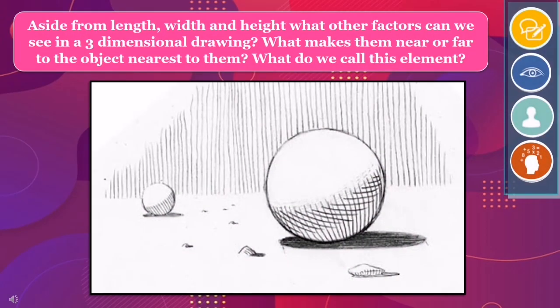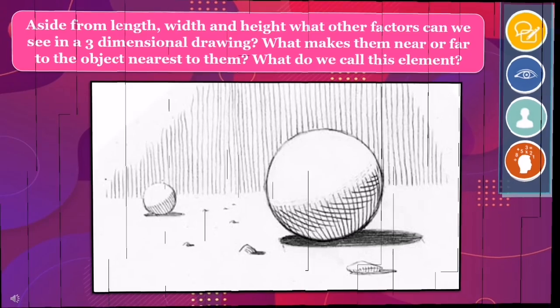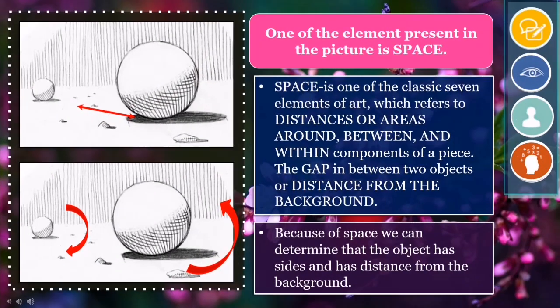Aside from length, width, and height, what other factors can we see in a three-dimensional drawing? What makes them near or far to the object nearest to them? What do we call this element? One of the elements present in the picture is space. Space is one of the classic 7 elements of art, which refers to distances or areas around, between, and within components of a piece — the gap in between two objects or distance from the background. Because of space, we can determine that the object has sides and has distance from the background.